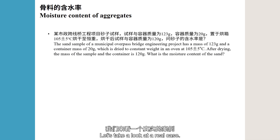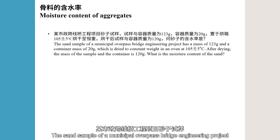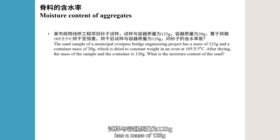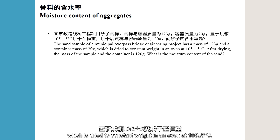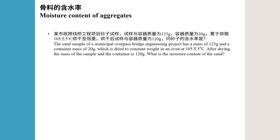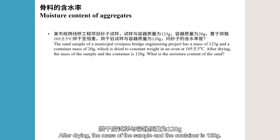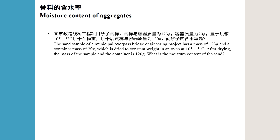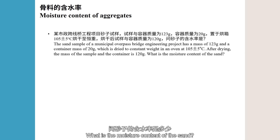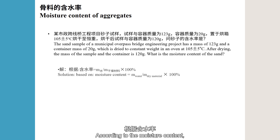Let's take a look at a real case. The sand sample of a municipal overpass bridge engineering project has a mass of 123 grams and a container mass of 20 grams, which is dried to constant weight in an oven at 105 ± 5 degrees Celsius. After drying, the mass of the sample and the container is 120 grams. What is the moisture content of the sand?